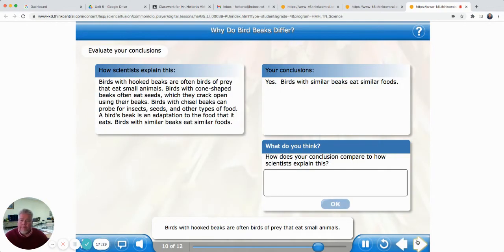Birds with hooked beaks are often birds of prey that eat small animals. Birds with cone-shaped beaks often eat seeds, which they crack open using their beaks. Birds with chisel beaks can probe for insects, seeds, and other types of food. A bird's beak is an adaptation to the food that it eats. Birds with similar beaks eat similar foods. How does your conclusion compare to how scientists explain this? Type your answer in the box, then click OK. Well, we agree, don't we?